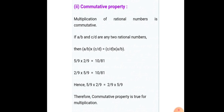Commutative property: multiplication of rational numbers is commutative. If you multiply two rational numbers in any order, you always get the same result. For example, 5/9 × 2/9 gives 10/81. If we change the order of multiplication, we still get the same result. Therefore, commutative property is true for multiplication.